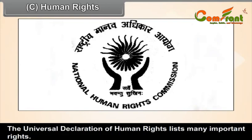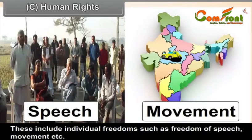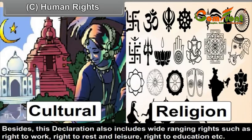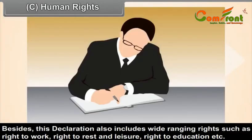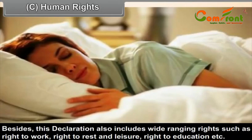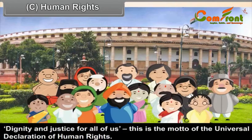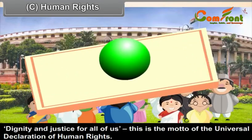The Universal Declaration of Human Rights lists many important rights, including individual freedoms such as freedom of speech and movement, right to equality, cultural rights, and freedom of religion. The declaration also includes wide-ranging rights such as the right to work, right to rest and leisure, and right to education. The purpose is to ensure a balanced development of every individual and equal worth of all persons. 'Dignity and justice for all of us' is the motto of the Universal Declaration of Human Rights.